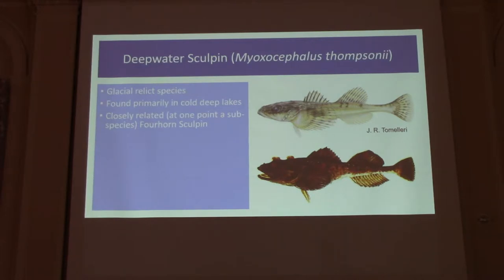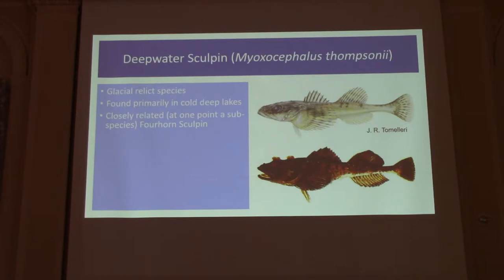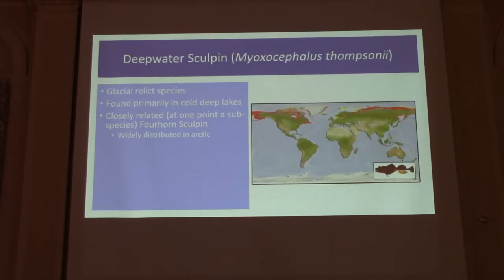What's interesting about deepwater sculpin is that they're very closely related to another species called the four-horn sculpin — in fact, they were listed as a subspecies at one point. The four-horn sculpin have awesome bumps, sort of horn-ish rounded lumps on top of their head, that appear to be related to bird predation. Deepwater sculpin, since they now live at the bottom of lakes, don't deal with bird predation regularly, so they don't have those humps. The four-horn sculpin are circumpolar, all over the northern Arctic waters, and that's the species that gave rise to the deepwater sculpin we have now.